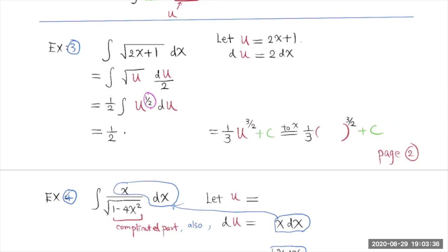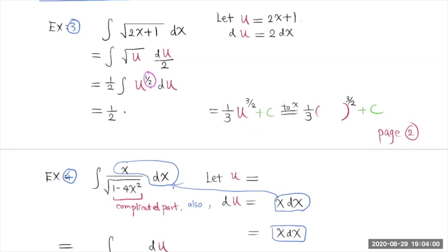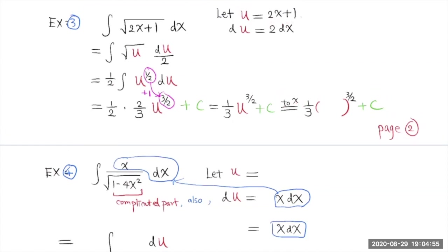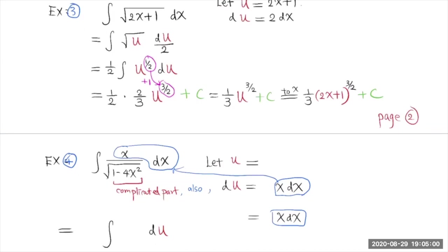We bring the constant 1/2 in front of the integral. To find the antiderivative, rewrite the square root as u to the 1/2 power. When you take the antiderivative, the exponent increases by 1, giving u to the 3/2, times the reciprocal, which is 2/3. Don't forget to add the constant. Simplify, then replace u with 2x + 1 to get the final answer in terms of x.